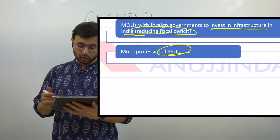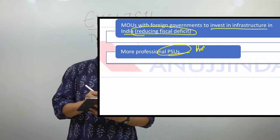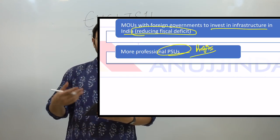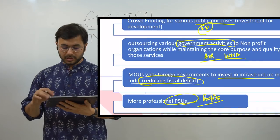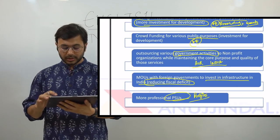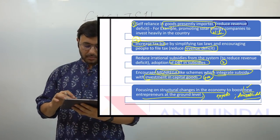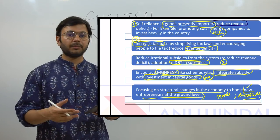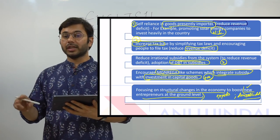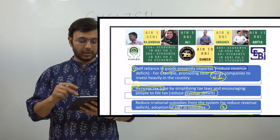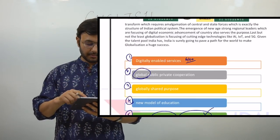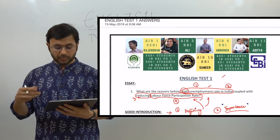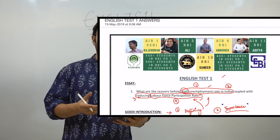More professional public sector enterprises and public sector units so that their profits can reduce the fiscal or revenue deficit in the country. These are all multi-dimensional points trying to cover both fiscal deficit and revenue deficit at the same time. This was about English Test 1 — I hope you liked it. Next, we will be discussing English Test 2 very shortly.